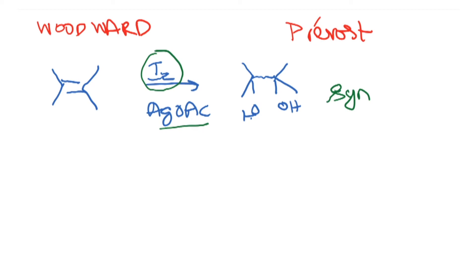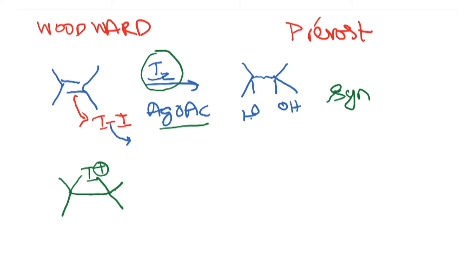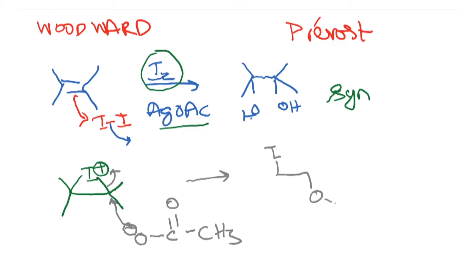The mechanism has very similar features to the Prévost reaction. The reaction with iodine remains the same — it gives the cyclic iodonium ion with iodide kicked out. But instead of benzoate, we now have acetate, which attacks from the backside, opening up the iodonium ion. The carbon–iodine bond breaks and the product formed has I on one carbon and an O–C(=O)–CH3 group on the other, with anti relative geometry.